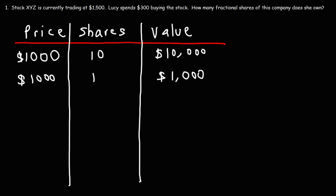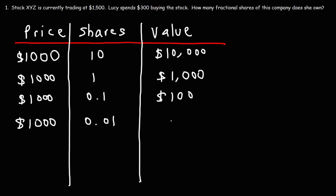But what if you don't have $1,000 to invest? If you have $100, how many shares of this stock can you buy? Because the value of the investment is less than the price of the stock, you can only buy fractional shares. With $100, you can buy 0.1 fractional shares of this stock — $1,000 times 0.1 is $100. If you own 0.01 fractional shares, then the value of that investment will be $10.